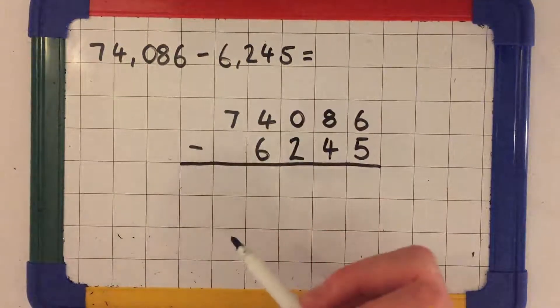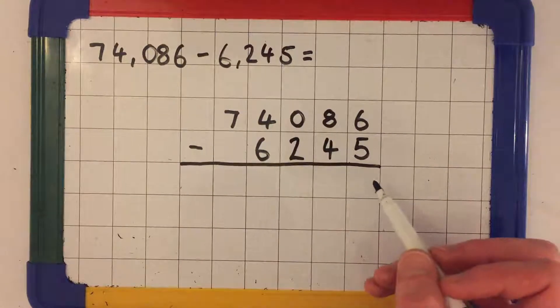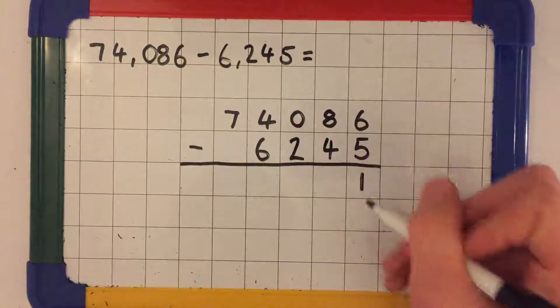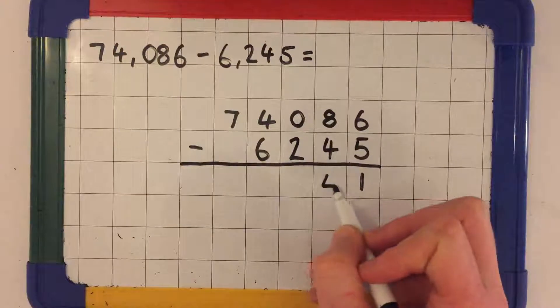You always start off by subtracting on the far right hand side first, your ones. 6 subtract 5 is 1. Now we move on to the tens. 8 subtract 4 is 4.